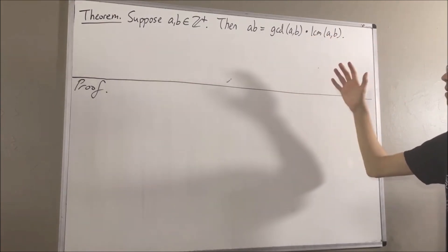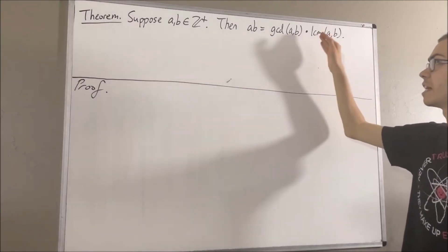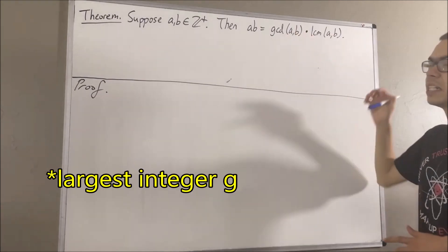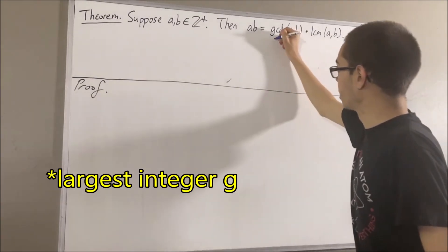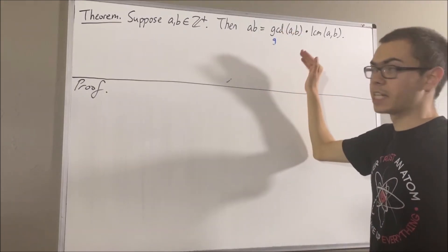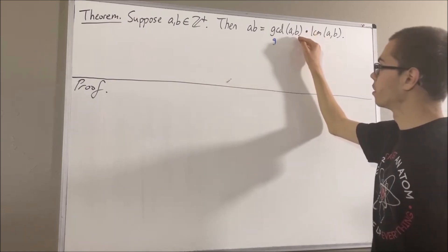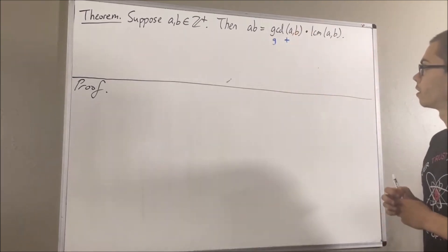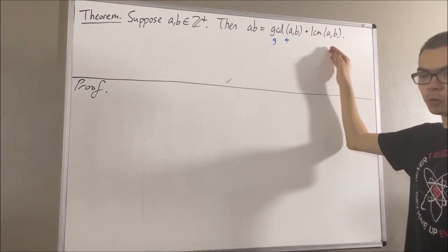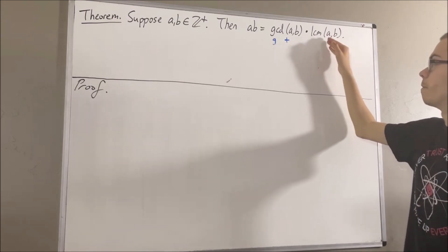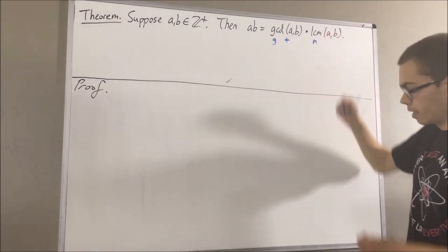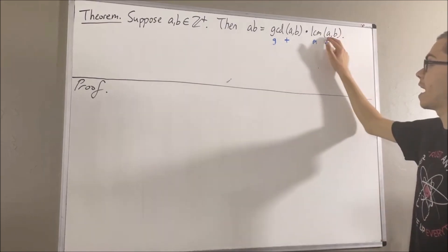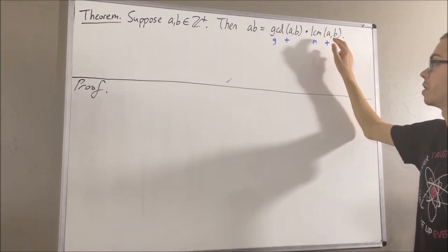Let's first remind ourselves the definition of greatest common divisor and least common multiple. The greatest common divisor of A and B is the smallest positive integer G such that G is a divisor of both A and B. The least common multiple of A and B, which we will call M, is the smallest positive integer which has the property that A and B are both divisors of M.